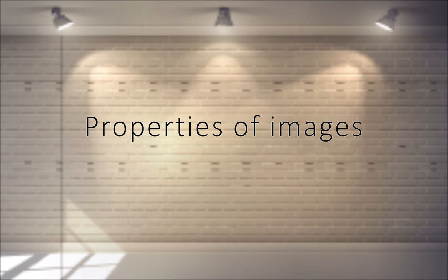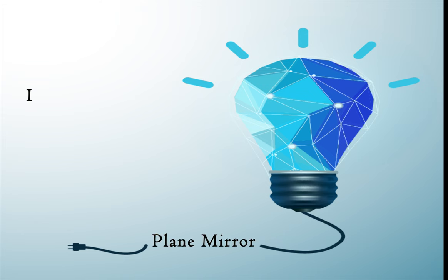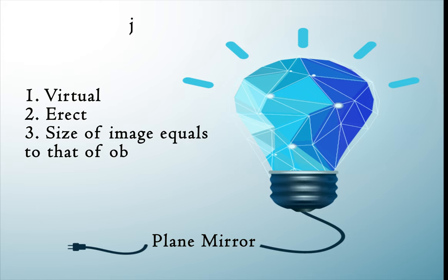What are the properties of image formed by a plane mirror? Images formed by a plane mirror is always virtual and erect. The size of the image equals the size of the object. The image formed is far behind the mirror and also laterally inverted.